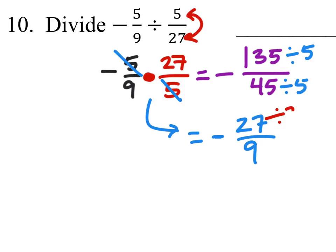27 and 9 are both divisible by 3. So I got negative, 27 divided by 3 is 9, and 9 divided by 3 is 3.